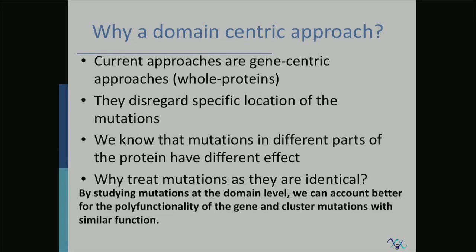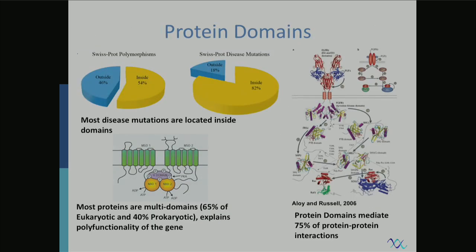The location of mutations is important. If you know anything about proteins, you know that different regions of the protein have different functions, and some could be more important than others. When you look at a gene as a whole, genes have different functions. In many cases, this polyfunctionality can be explained by mutations being in different protein domains of that particular gene. This is what we're going to be exploring today — so just a brief recount on protein domains.